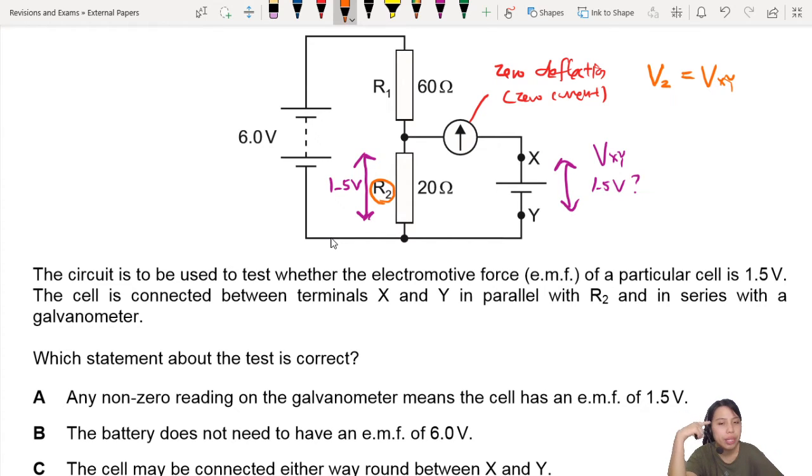Option A says any non-zero reading on the galvanometer means the cell has an EMF of 1.5 volts. No, that's not how it works. You need a zero reading, then you know it's 1.5 volts. So no, cancel this.